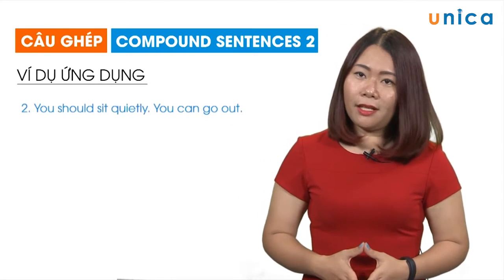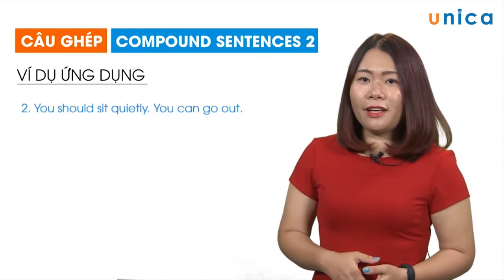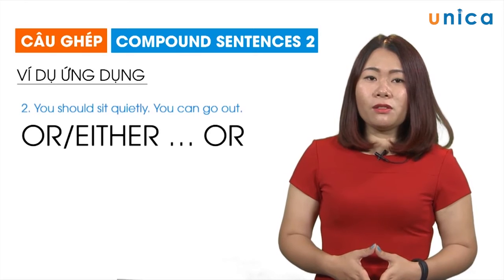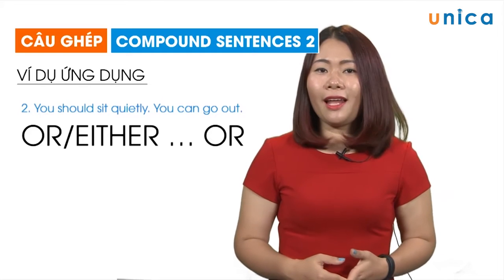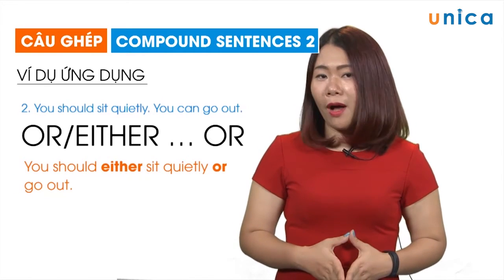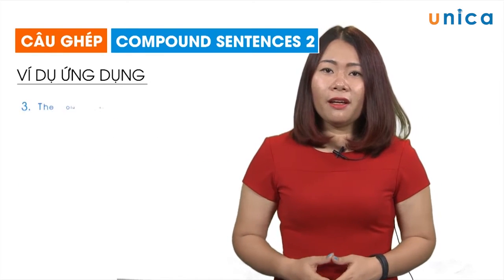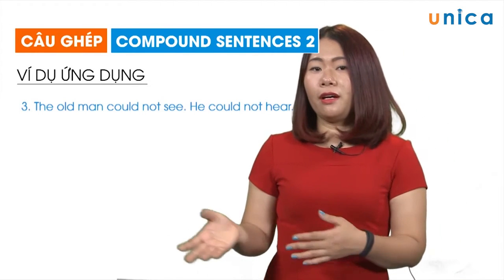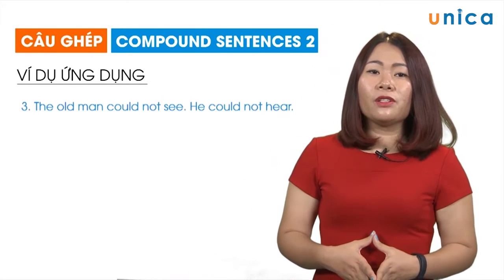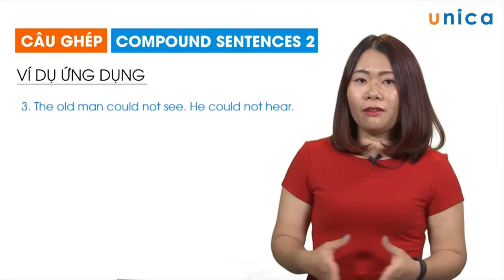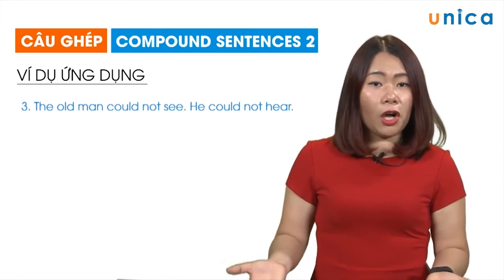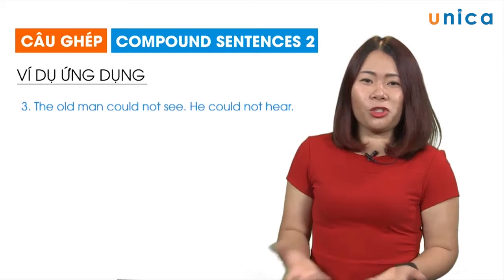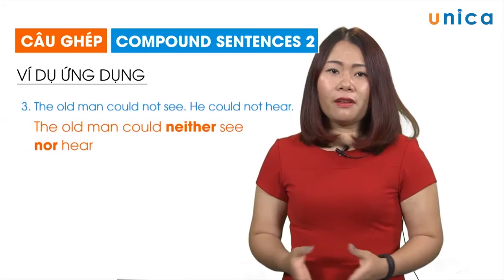Câu thứ hai: 'You should sit quietly. You can go out.' Tương tự như câu trên, ở đây chúng ta có thể sử dụng từ nối 'or' hoặc cặp từ nối 'either...or...' để nhấn mạnh sự lựa chọn giữa hai hành động: 'You should either sit quietly or go out.' Câu thứ ba: 'The old man could not see. He could not hear.' Hai câu này đều ở dạng phủ định 'could not', và chủ ngữ chung nhau. Cho nên chúng ta sẽ sử dụng cặp trạng từ 'neither...nor': 'The old man could neither see nor hear.'